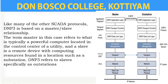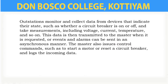Like many other SCADA protocols, DNP3 is based on a master-slave relationship. The term 'master' refers to a powerful computer located in the control center of a utility, while a 'slave' is a remote device with computing resources found in a location such as a substation. The outstations monitor and collect data from devices that indicate their state — such as whether a circuit breaker is on or off — and take measurements including voltage, current, and temperature.